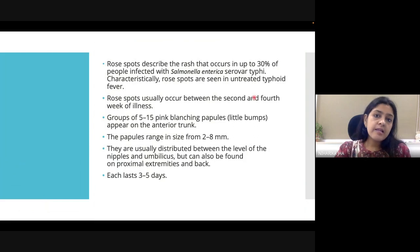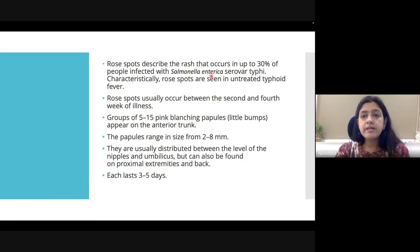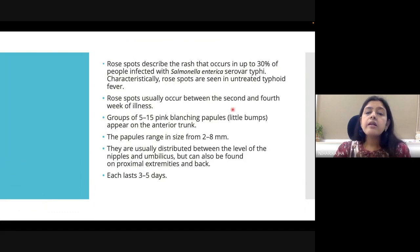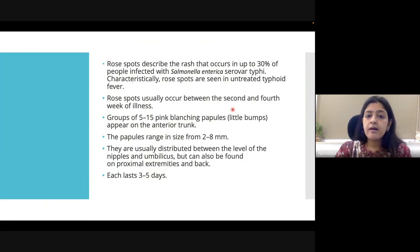Rose spots are seen in about 30% of patients infected with Salmonella typhi, and particularly seen in those patients who are untreated. So untreated typhoid fever patients can present with rose spots in about 30% of cases. It is usually seen in about the second to fourth week of the illness, and the appearance of the lesion has already been described.